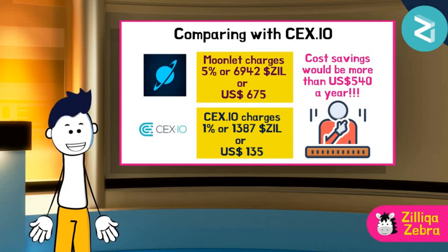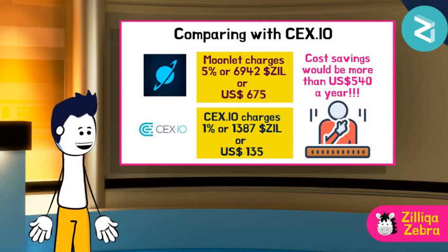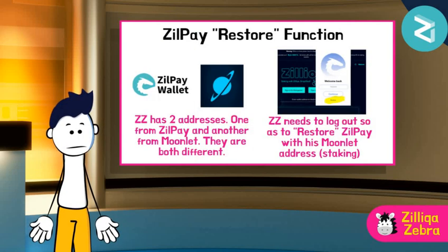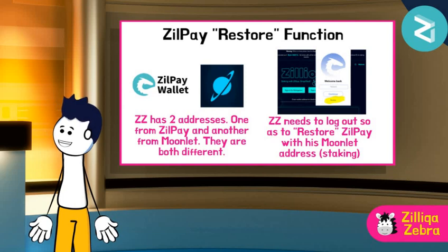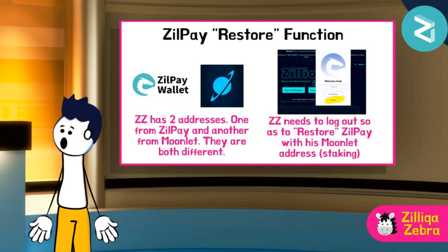Do note that this calculation is based on a linear hypothesis. If Zilliqa Zebra diligently claims and restakes his rewards every other day, the cost savings will be much more. Convinced that he should change SSN, Zilliqa Zebra decides to switch his SSN from Moonlit to CEX.IO.